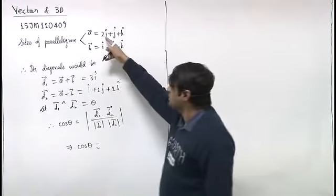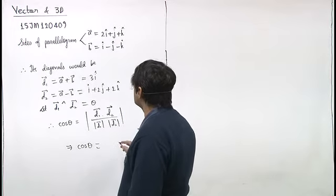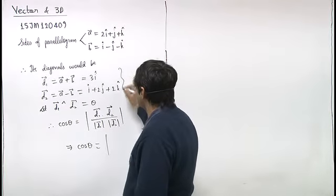So d1 dot d2, that will be equal to three.